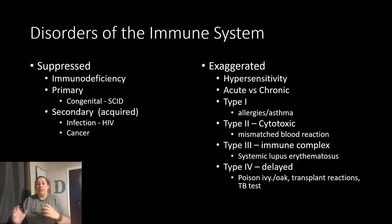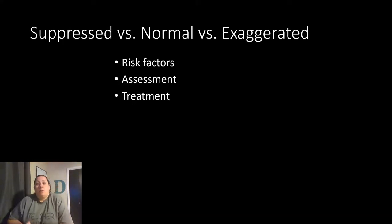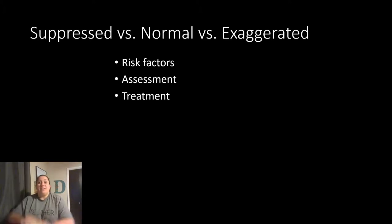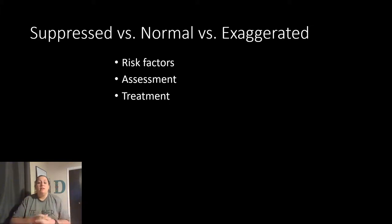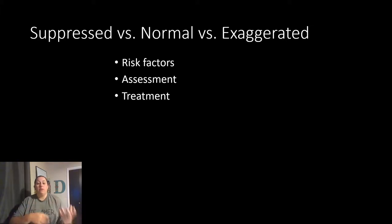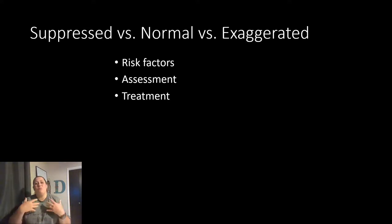Let's look at some risk factors. If you have a normal immune system, you likely have a good healthy lifestyle — exercising, eating right. But there are risk factors that can send you in each direction. Risk factors for suppressed immunity include age: the very young have immune systems that haven't fully developed yet — especially that third line of defense — making them more vulnerable. On the other hand, when we're very old, the immune system tires and doesn't work as well, making the elderly more susceptible.